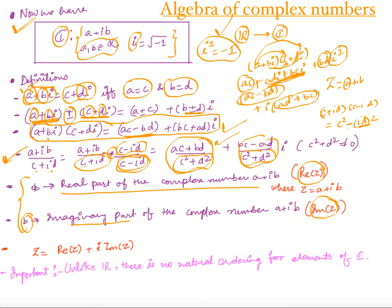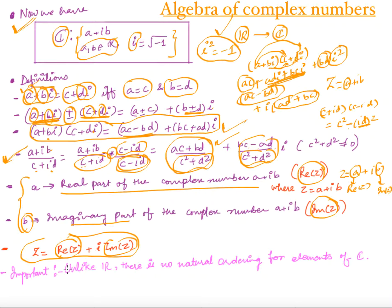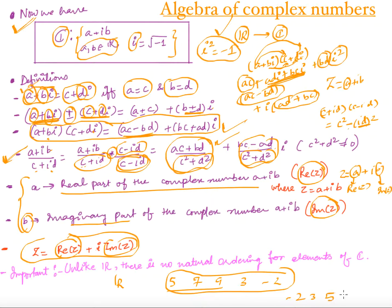We can always write a complex number as z equals Re(z) plus iota times Im(z). An important distinction: for real numbers we have a natural ordering — for example we can arrange 5, 7, 9, 3, minus 2 in ascending order on the real axis. But there is no such ordering for complex numbers; you cannot compare 5 plus 2·iota with minus 1 minus 3·iota.